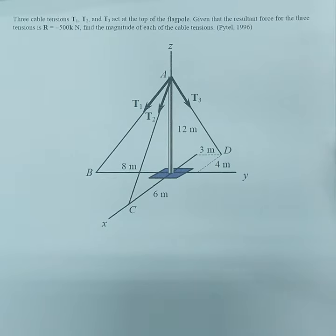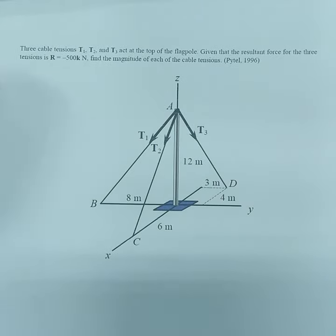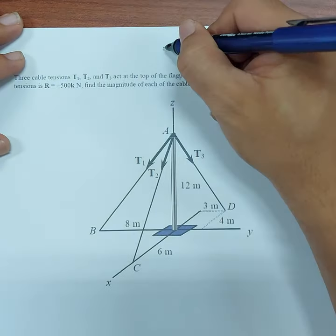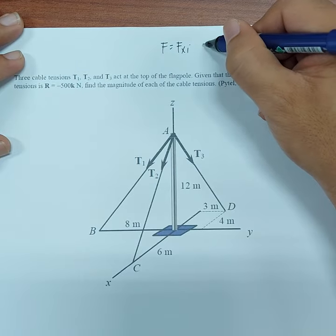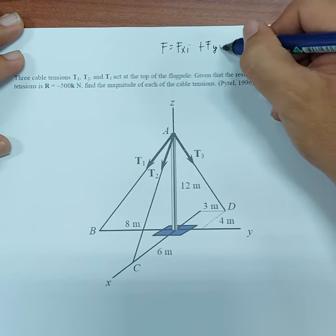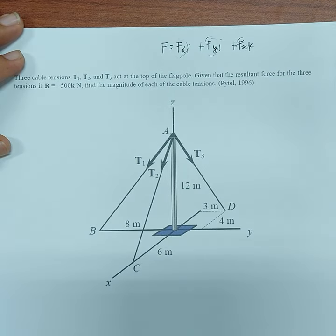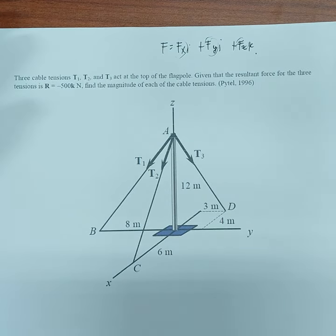So we're going to use the concepts we have discussed before: position vectors, unit vectors, and solving for the Cartesian vector form of each force. To review, the Cartesian vector form of a force F is equal to Fx·i plus Fy·j plus Fz·k. These are the components of force F along the x, y, z axes — this is how we represent the force in its vector form.